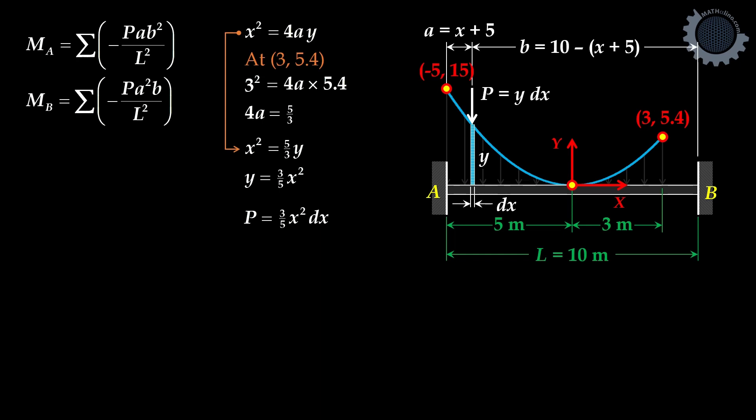Moment at A from the formula is negative P times A times B squared all over L squared, sum up from negative 5 to positive 3. That is distance.